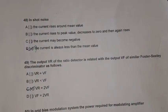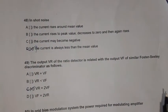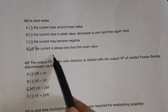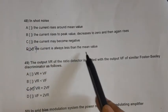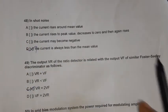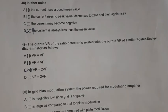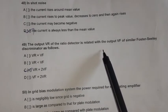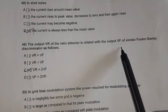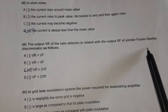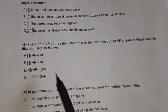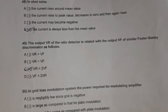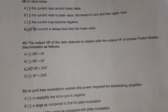Question 47: If VS is the signal voltage and VN is the noise voltage, the signal-to-noise ratio is defined as SNR equals (VS/VN) squared. Question 48: In shot noise, the current is always less than the mean value. Question 49: The output VR of the ratio detector is related to the output VF of the Foster-Seeley discriminator as VR equals 2 times VF.